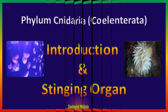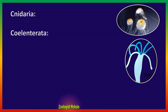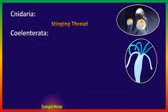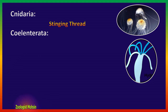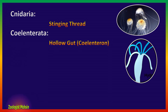Why is this Phylum called Cnidaria or Coelenterata? Cnidaria means Cnidae. The word Cnidaria has been derived from Cnidae, which are basically stinging threads or stinging organs — the basic recognition of this Phylum. Previously it was called Coelenterata because of a hollow gut cavity called the Coelenteron, present in the members of this group or Phylum.